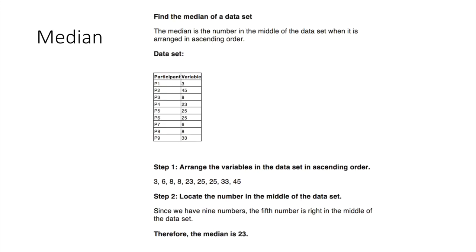The median is the number in the middle of the data set when it is arranged in ascending order. So we rearrange the data starting at 3, then 6, 8, 8, 23, 25, and so on. Since we have nine numbers, the fifth number is right in the middle. Counting along: 3, 6, 8, 8, 23 — so 23 is the median. It doesn't tell us as much, so we may not use it often, but it's important to understand how to calculate it.